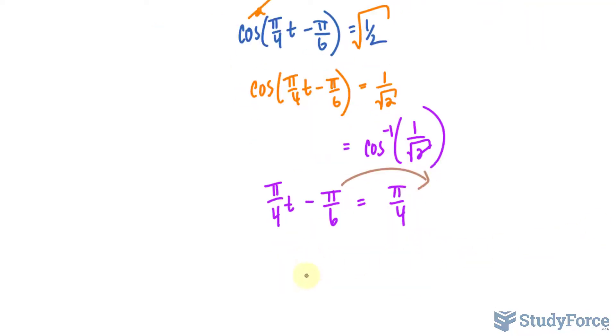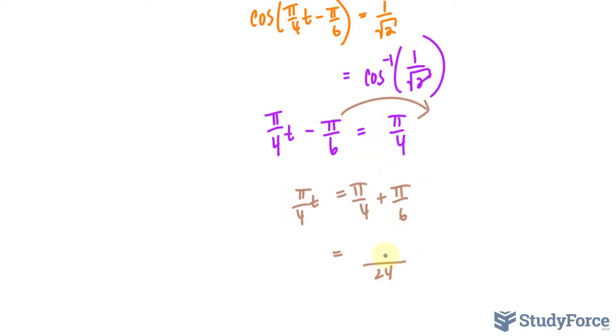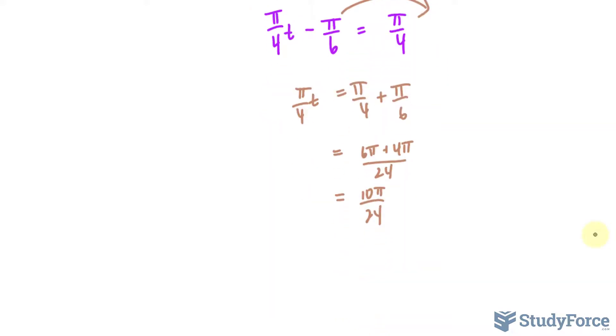Bringing that over and solving for t, we have 24, 6π plus 4π, that's 10π over 24. That reduces down to 5 over 12π. Divide both sides by π/4 to get t. We have 5π.